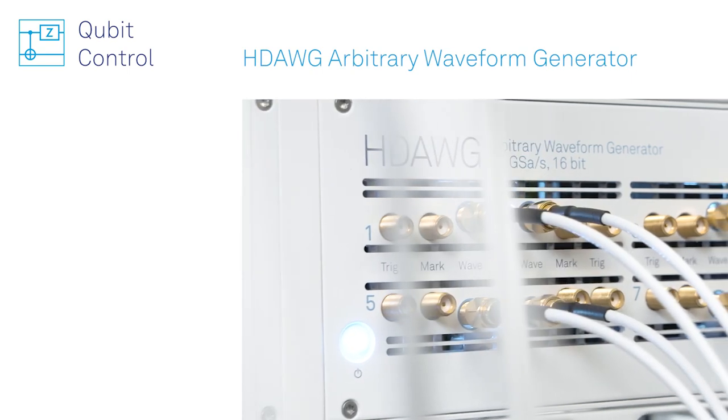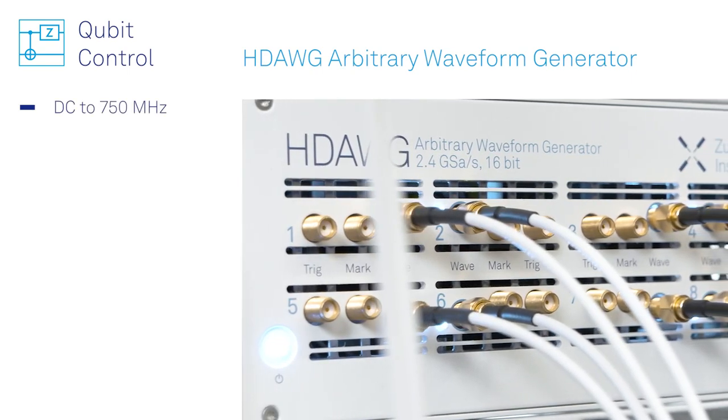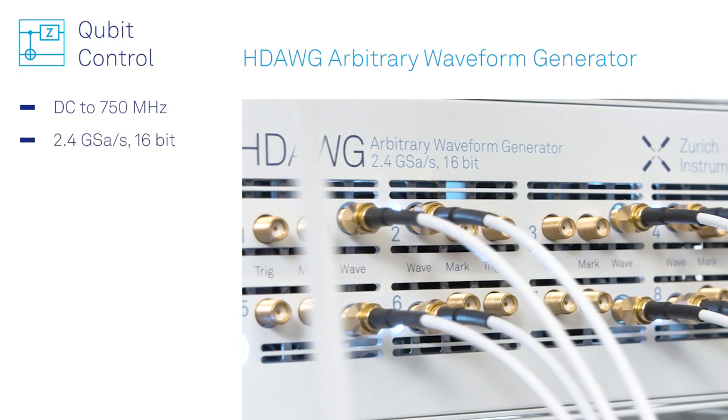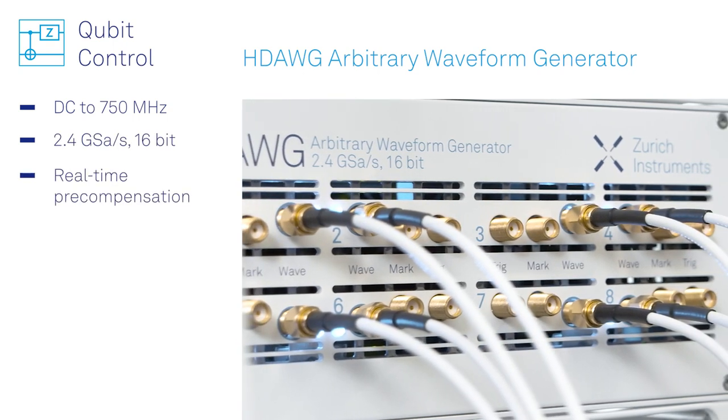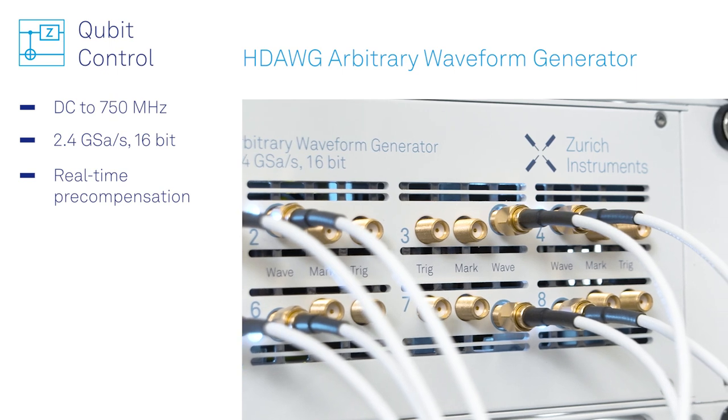The HDAWG arbitrary waveform generator covers fast, high fidelity flux bias control with low 1 over f noise, high resolution and real-time pre-compensation that let you forget about distortions in your setup.